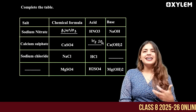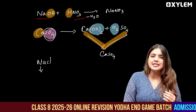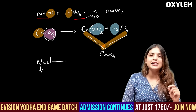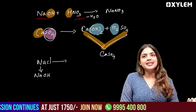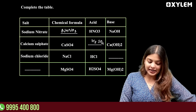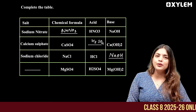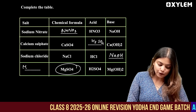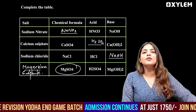Sodium chloride — NaCl. How do we make sodium chloride? Sodium hydroxide reacts with hydrochloric acid to give NaCl and water. MgSO4 is magnesium sulfate. Salt names and chemical formulas are very important — I will show you three or four of them.